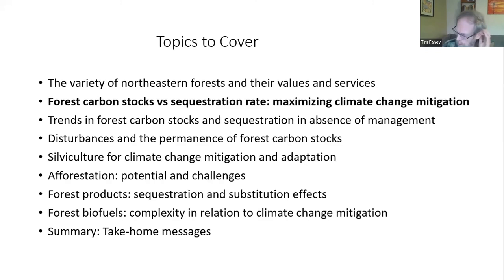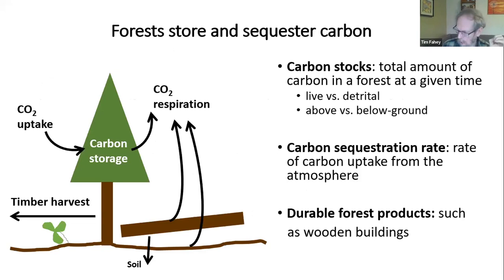First, the distinction between forest carbon stocks and forest carbon sequestration rate. Forest carbon stocks are the mass of carbon per unit of ground area — the amount of carbon stored in the trees and in the soils, measured in tons per acre or hectare. About half of the dry mass of a tree is carbon, and that's the relationship between biomass and carbon stock.